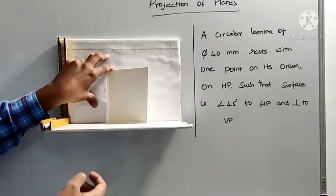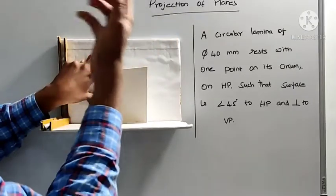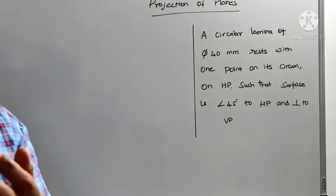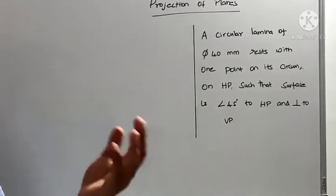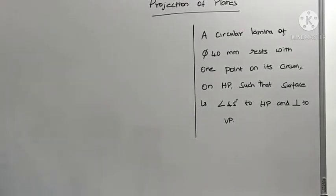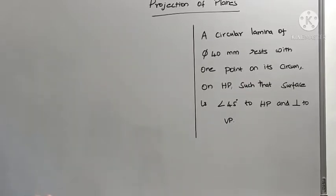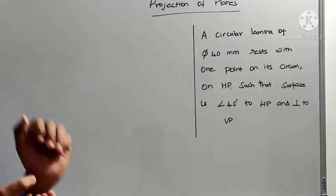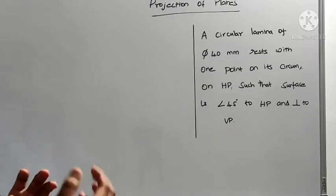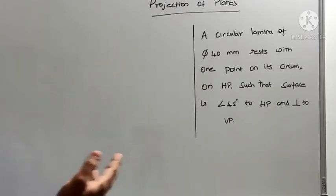It will look like a rectangle. In the top view, you will see the true length of one side. So when you apply surface inclination to the plane, the true shape will not be visible in either the front view or the top view. In that case, we need to use the change of position method. In the change of position method, first you need to draw the simple position by satisfying the given conditions, and then draw the front view and top view. After drawing the simple position, you need to apply the surface inclination to get the final position.